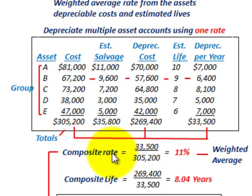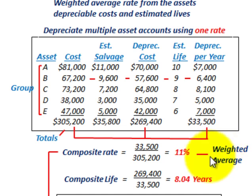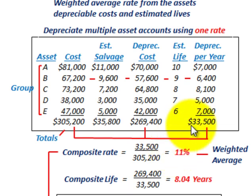To determine our composite rate — this one depreciation rate — we take our depreciation expense per year of $33,500 and divide it by the total group's original cost of $305,200. We get a composite depreciation rate of 11% for this group, which is a weighted average rate. The composite life is the total depreciable cost of $269,400 divided by the depreciation per year of $33,500, giving us a composite life of 8.04 years for this total group of assets.